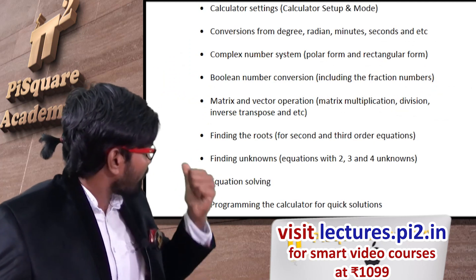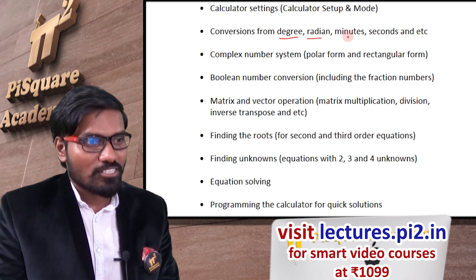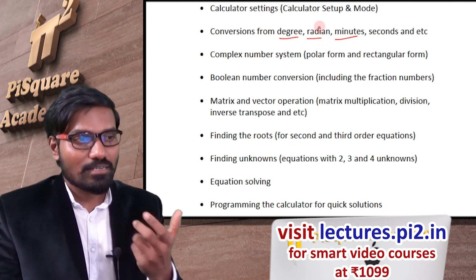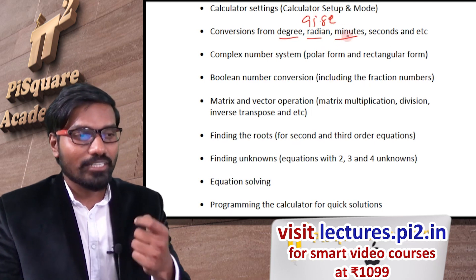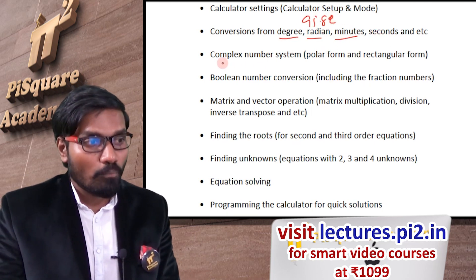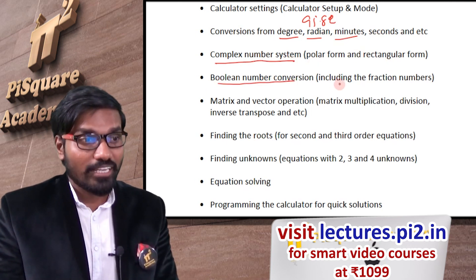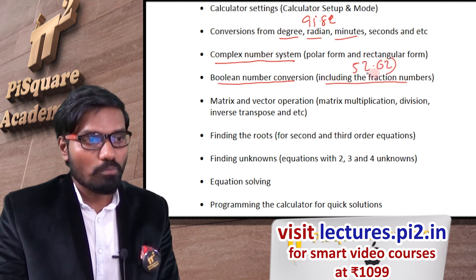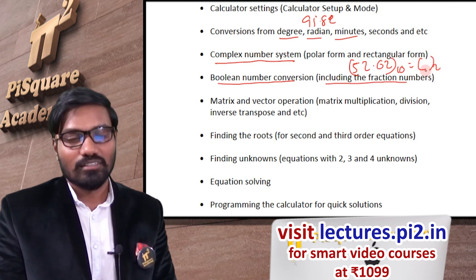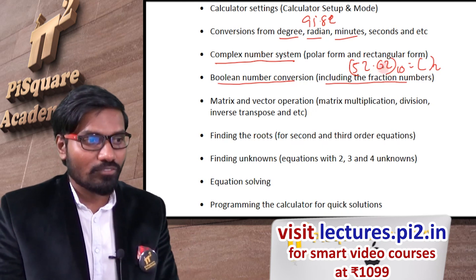In this lecture series I'll discuss all these useful functionalities — such as degrees, radians, and minutes. For example, if 95.82 degrees are given, how to convert into minutes and seconds. Also complex number systems, polar to rectangle and rectangle to polar conversions, and boolean number systems including fractions. For example, 52.62 base 10 — how to convert into binary, which is not generally possible with a calculator. I'll tell you a workaround to get this conversion.